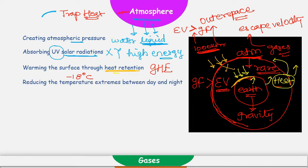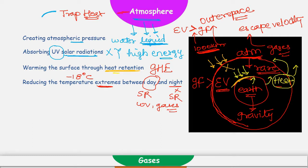Apart from this, atmosphere is reducing the temperature extremes between day and night. During daytime, Earth is receiving solar radiations. But during nighttime there are no solar radiations. Atmosphere contains water vapors and different kinds of gases. These water vapors and different gases are absorbing some solar radiations and also absorbing the heat which is radiated by Earth. This heat doesn't allow the Earth to become too cold during nighttime when solar radiations are not there.